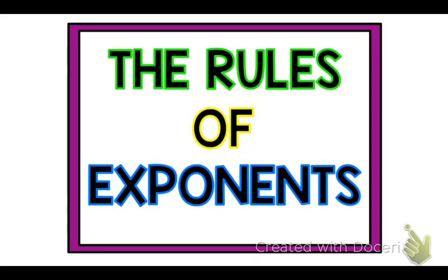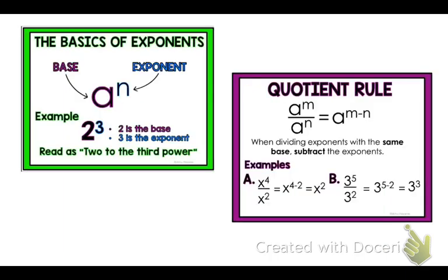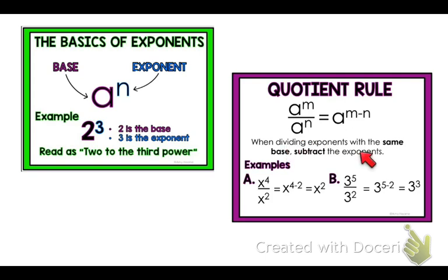Now we're going to do quotient rule — that's our next rule of exponents. Remember the basics: the base and your exponent, and how you read that. For quotient rule, when you have the same base, you're going to be subtracting those exponents.